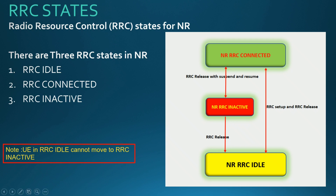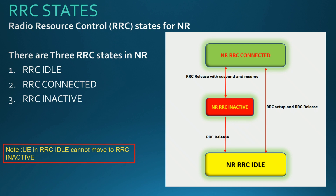I have illustrated a diagram showing how all three states relate to each other. When the UE is in RRC Connected mode, it can move to RRC Idle via RRC Connection Release, and can move back to RRC Connected via RRC Connection Re-establishment.